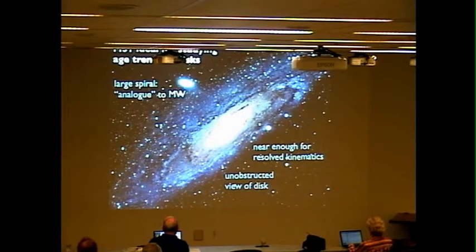So fortunately, there is a Goldilocks galaxy. M31, Andromeda is ideal for studying age trends in large disks like this. It's a large spiral, an analog to the Milky Way. It's nearby enough that we can get velocities of individual stars, and it is oriented such that we have an unobstructed view of an entire side of the disk.